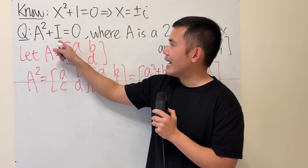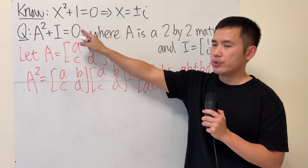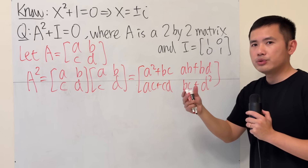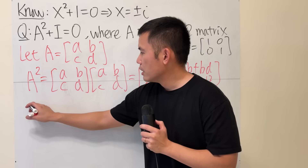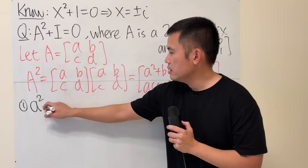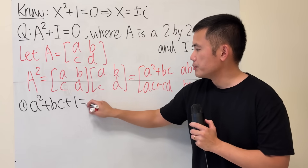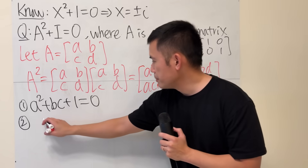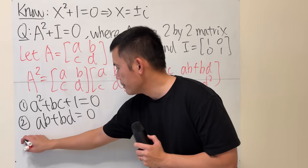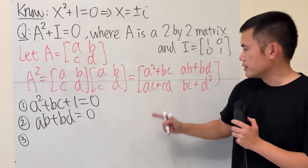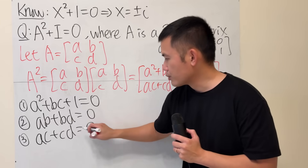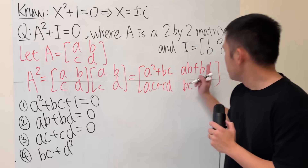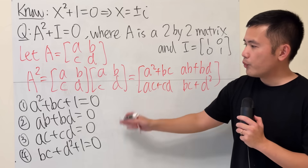Now I add A squared to I — which is [1, 0; 0, 1] — and set it equal to the zero matrix. Matching entries gives us four conditions: (1) a² + bc + 1 = 0, (2) ab + bd = 0, (3) ac + cd = 0, and (4) bc + d² + 1 = 0.